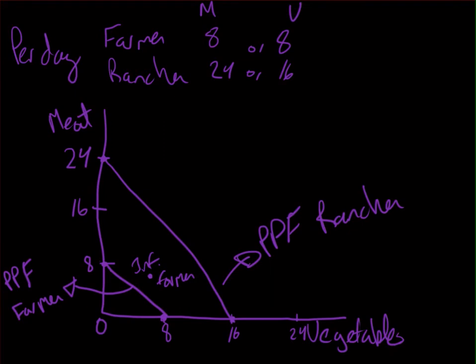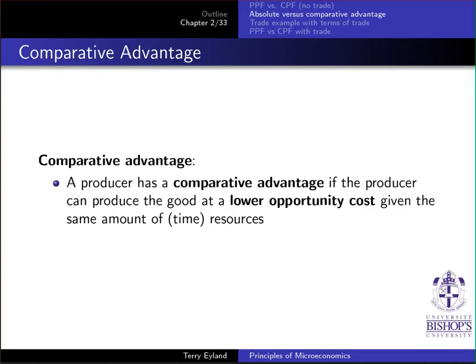Now let's look at the other main topic, which will be the most used one: comparative advantage. A producer has a comparative advantage if they can produce a good at a lower opportunity cost, given the same amount of time or resources.